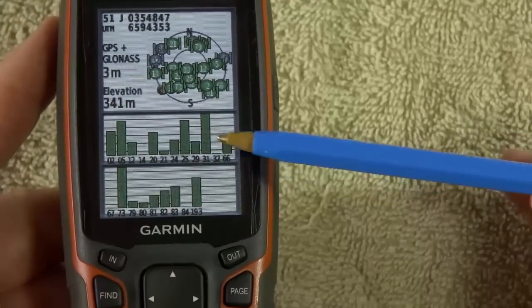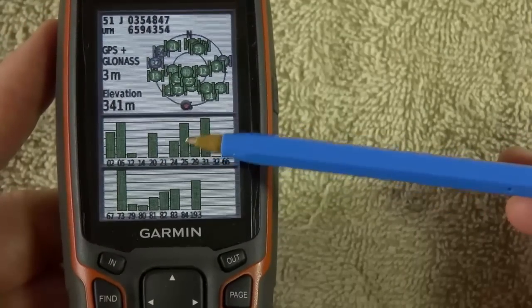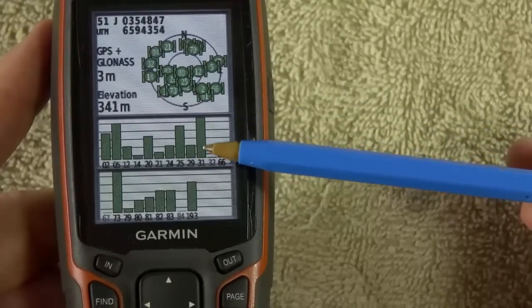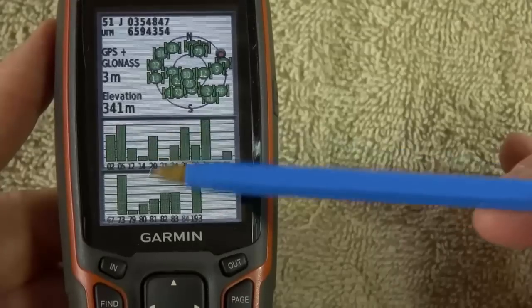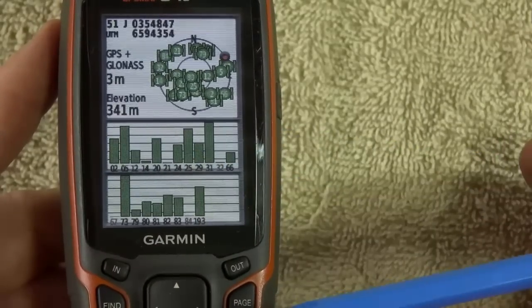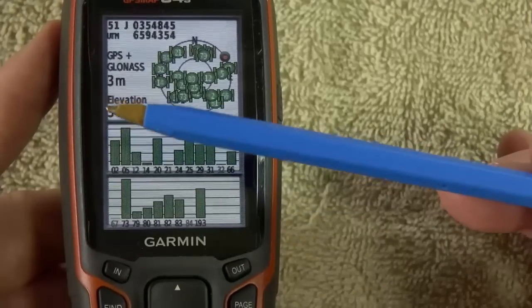Now, these dancing bars in the bottom here, these represent, well, the number corresponds to which satellite. And then the higher the bar, the stronger the signal strength from it. So obviously, the higher the more you've got up there, the more accurate you're going to be. See, we've already jumped down to 3 metres.